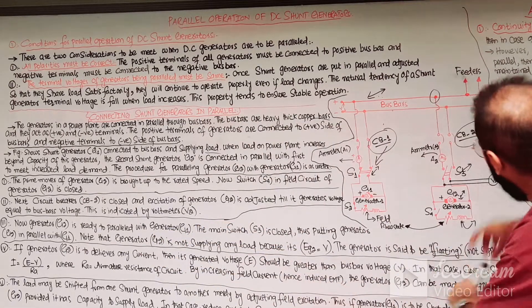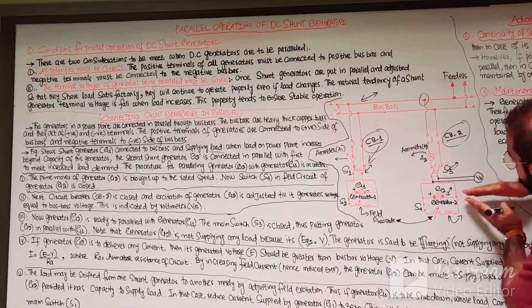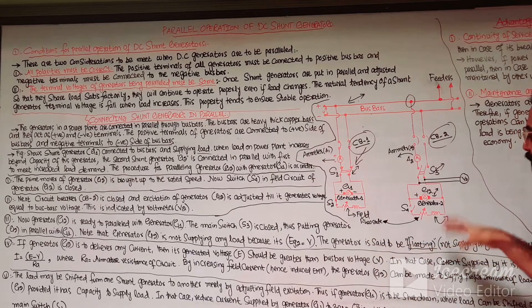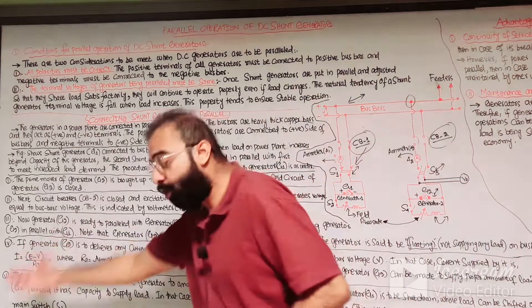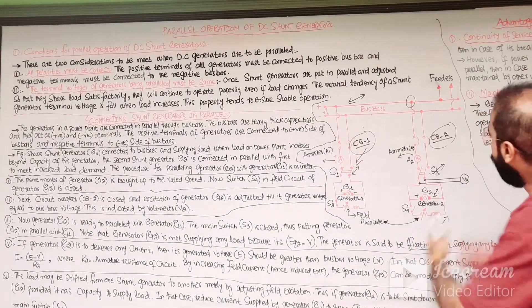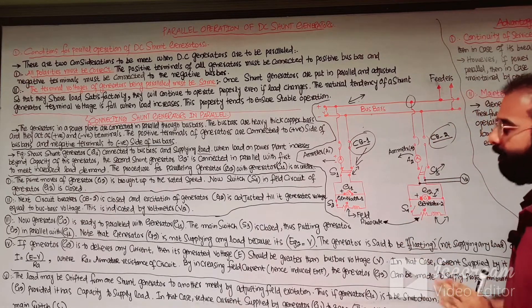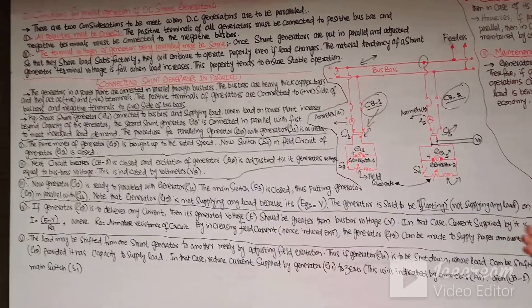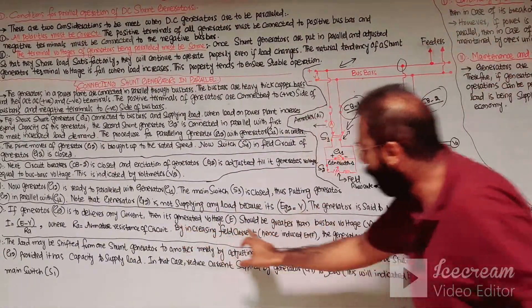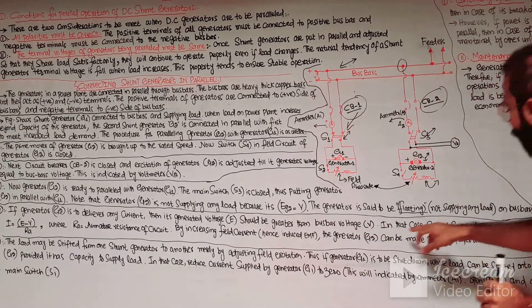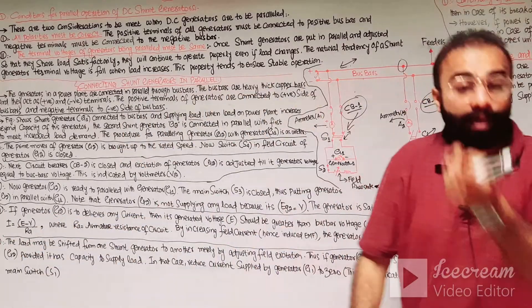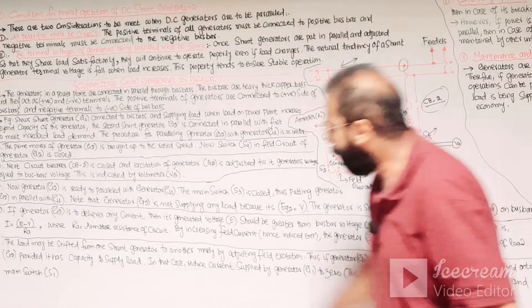In the floating state, generator G2 is not supplying any load because its terminal bus bar voltage equals the G2 generator voltage. The fourth step: if generator G2 is to deliver any current to the bus bars, its generated voltage must be greater than the bus bar voltage. In that case, the current supplied is the difference of the generated voltage and the terminal voltage divided by the resistance of the armature circuit of G2, increased by raising the field current.